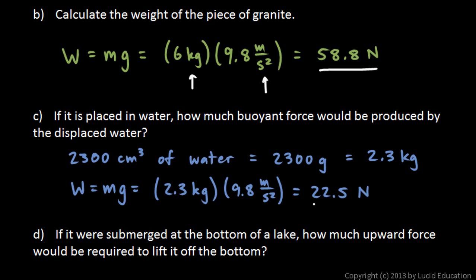So these two numbers, think about these two numbers together. Gravity is pulling down this hard. Okay, that's the weight. And then the water, the buoyant force of the water is pushing up with this much. Now the gravity wins in this case, right? The 58.8 downward force is bigger than the upward buoyant force. So it sinks. There's not enough upward buoyant force to overcome the force of gravity. But these two numbers together allow us to answer question D here.